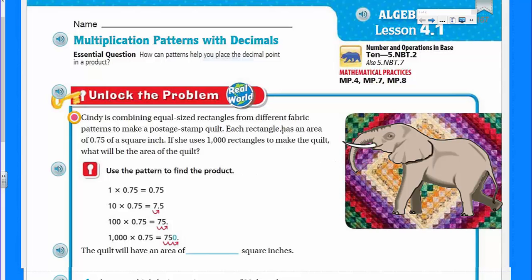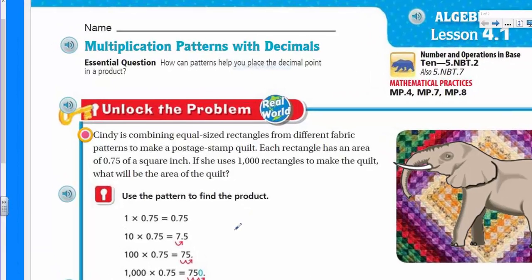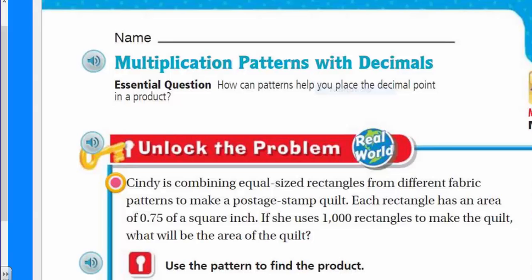First things first — let's go ahead and unlock that problem. It states: Cindy is combining equal-sized rectangles from different fabric patterns to make a postage stamp quilt. Each rectangle has an area of 75 hundredths of a square inch. If she uses 1,000 rectangles to make the quilt, what will be the area of the quilt?